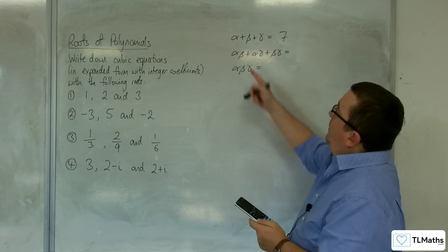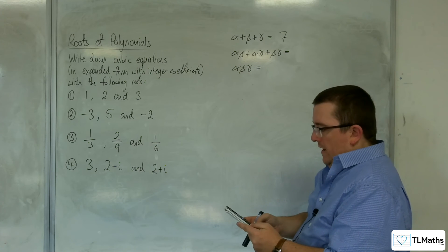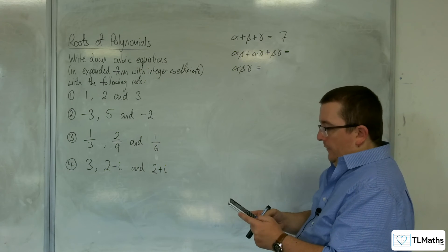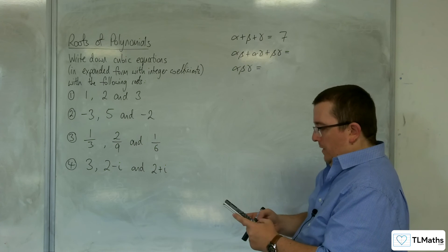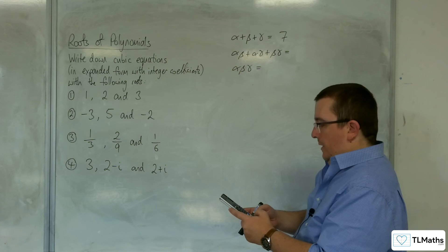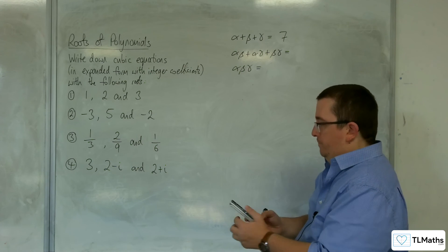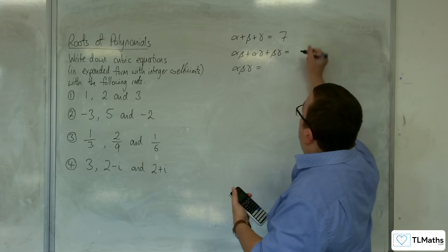Then, for the sum of the product pairs, we're going to have 3 lots of 2 take away i, plus 3 times 2 plus i, plus 2 minus i times 2 plus i, and we get 17.